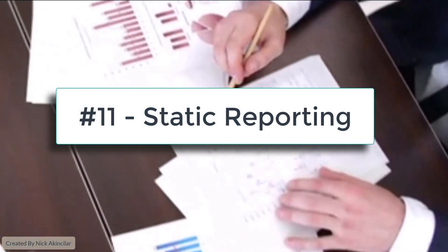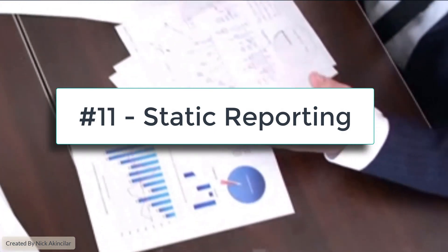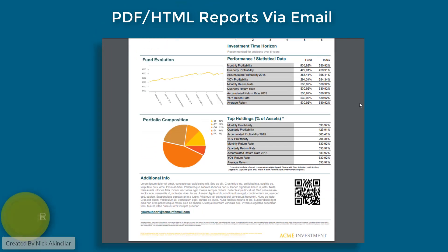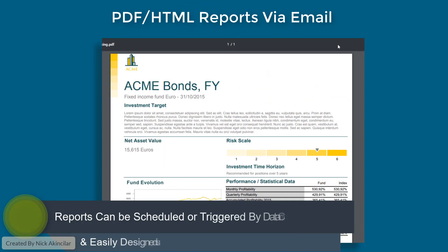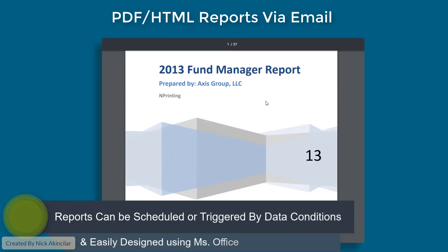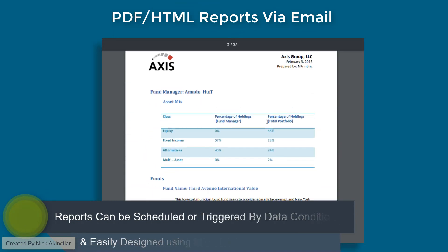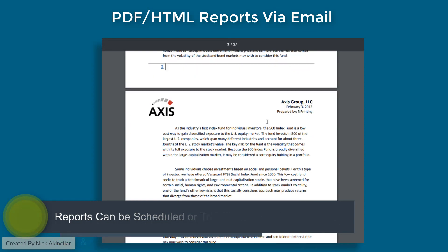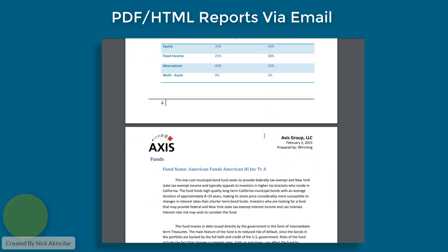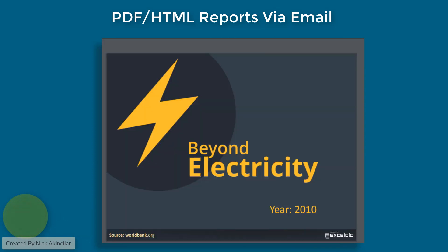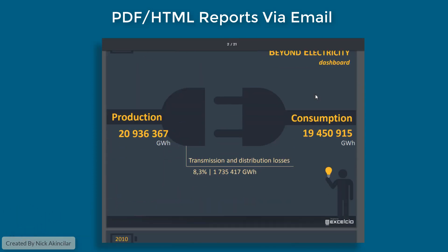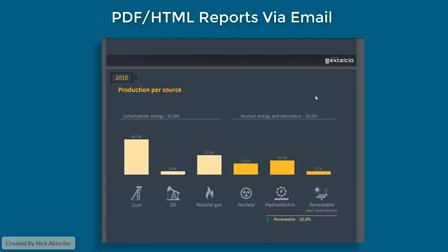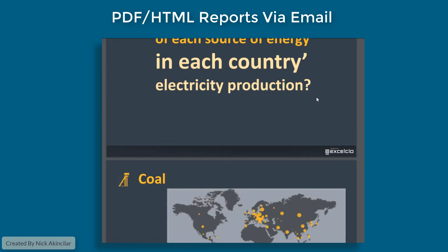Number eleven: static reporting. Qlik's platform also includes a static reporting module where reports in a variety of formats can be emailed based on a time schedule or a data-driven event. These reports can be easily authored using standard Microsoft Office products such as Microsoft Excel, Word, or PowerPoint.